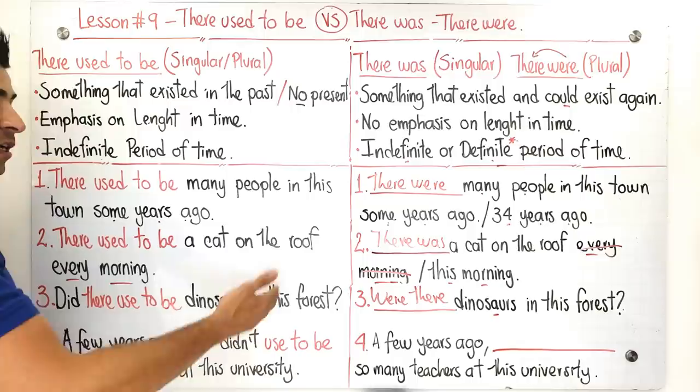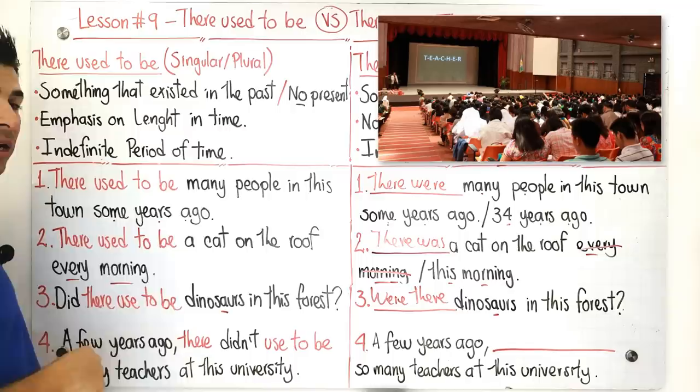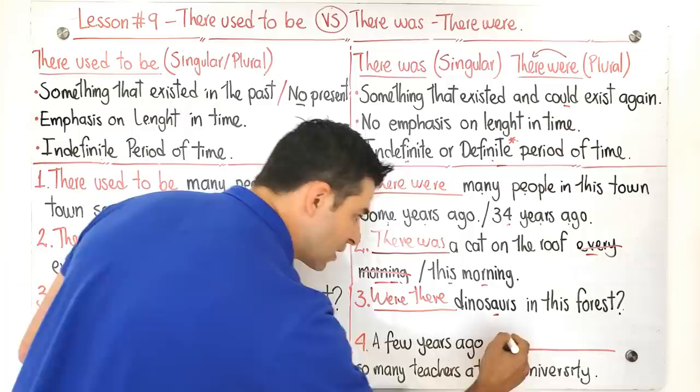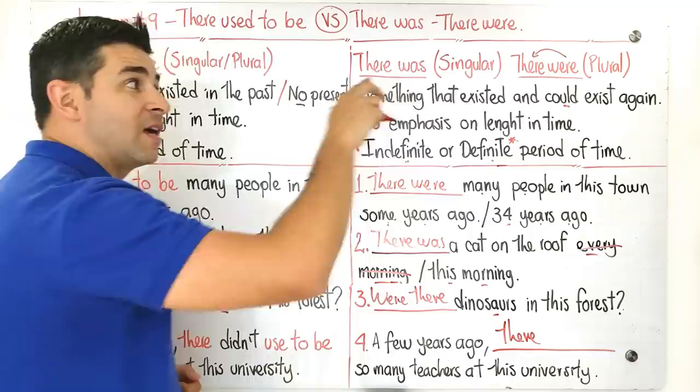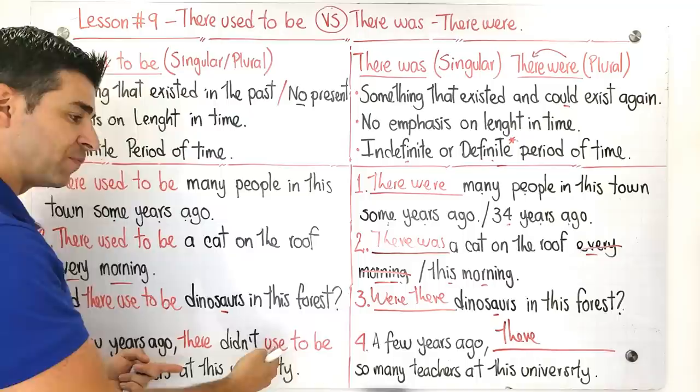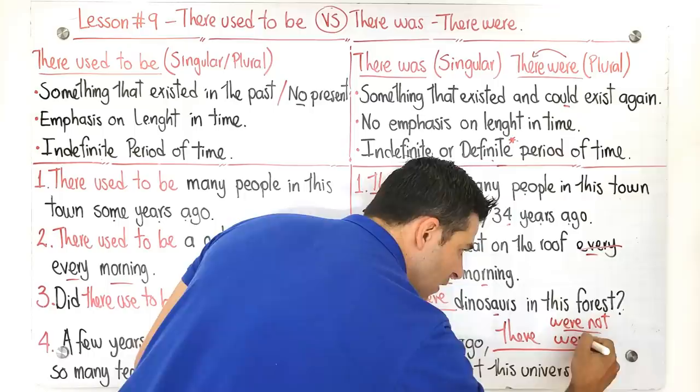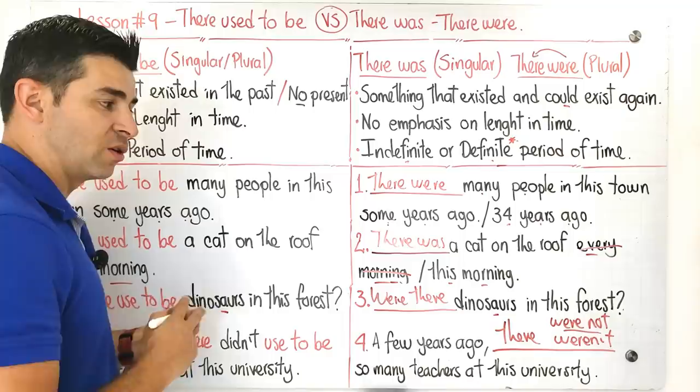Now guys, let's continue with number four. A few years ago, there didn't used to be so many teachers at this university that we have right here, which is the context. And pay attention to the number four here. A few years ago, what is the correct answer here? If we're talking about so many teachers, in this case is there were. It would be there were, guys, because we're talking about many teachers. It's plural, but this is a negative sentence, so I had to put it in a negative form too. So you can use it like this: there were not, or you can also do this in the short form like this: there weren't, there weren't so many teachers at this university.